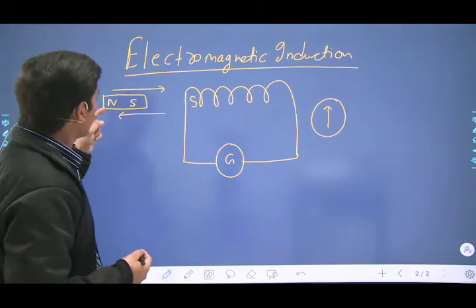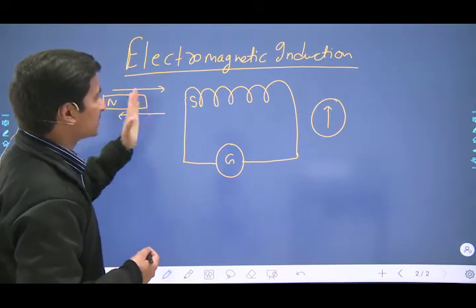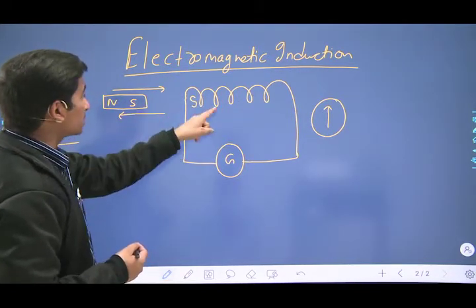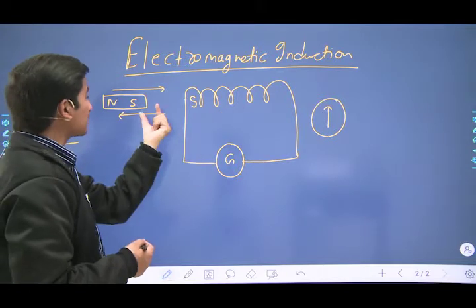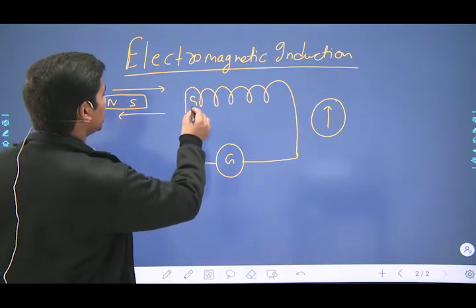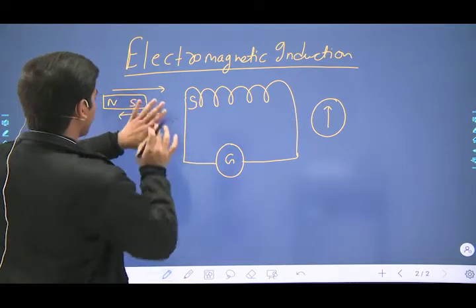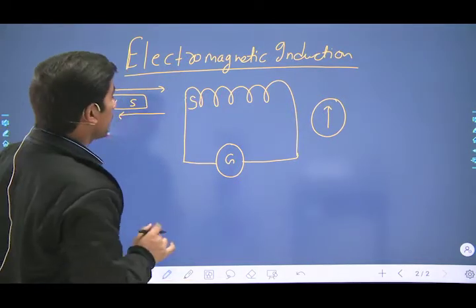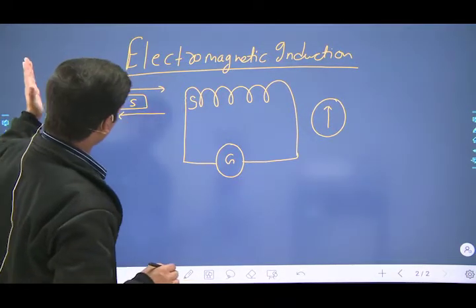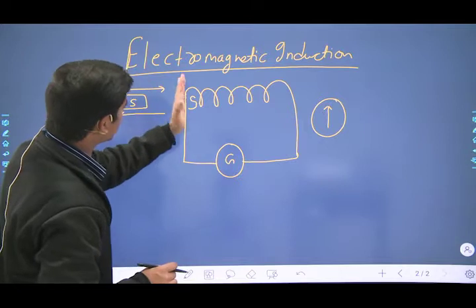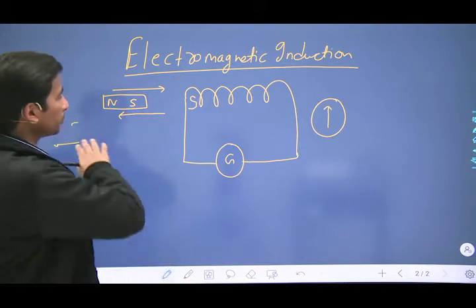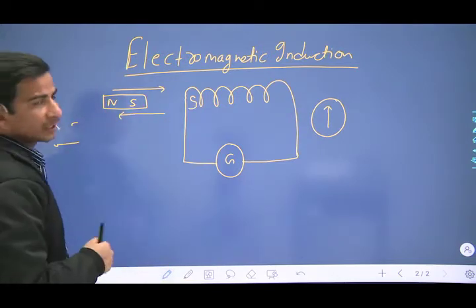South pole ke close aane ki wajah se induced current produce hoti hai, aur ye induced current is tariqe ki hai ki ye south pole ko door bhejna chahti hai. The induced current was produced due to the bringing of the south pole near, but it opposes the motion of the south pole — south pole ko close laane ke liye ye opposition paida karti hai.